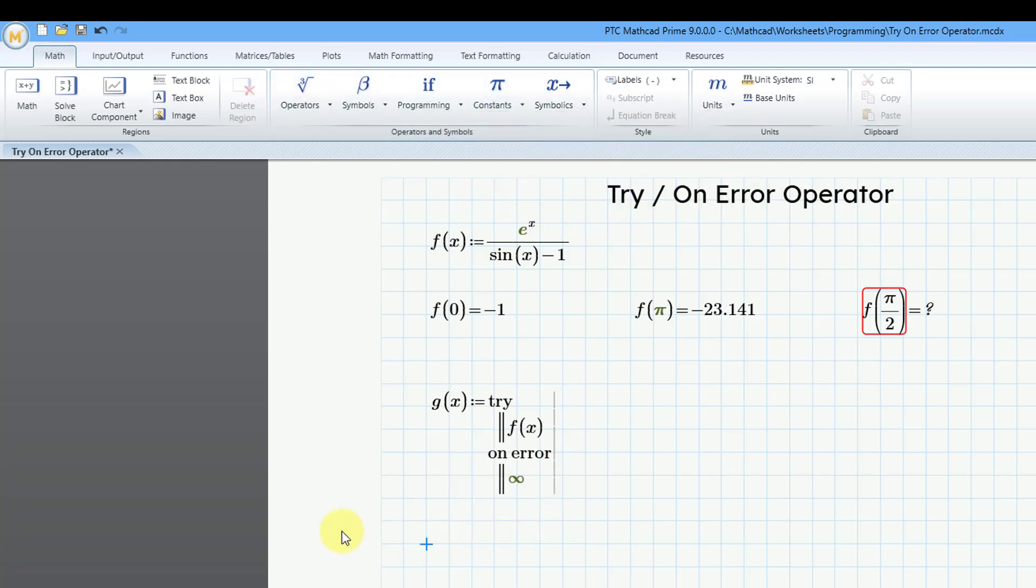Now let's try evaluating this a few times. So g of 0 equals, just like before, negative 1. Okay, let's move over.